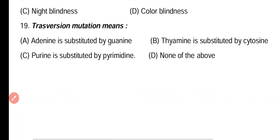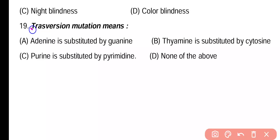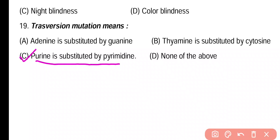Question 19. Transversion mutation means: adenine is substituted by guanine, thymine is substituted by cytosine, purine is substituted by pyrimidine, none of the above. Correct answer is option C. Transversion mutation means a purine base is substituted by a pyrimidine base.